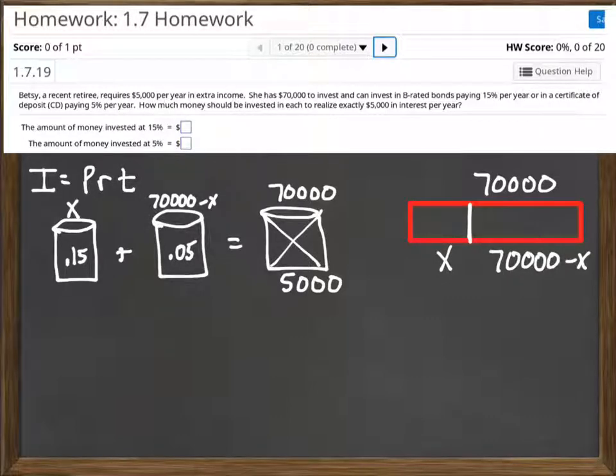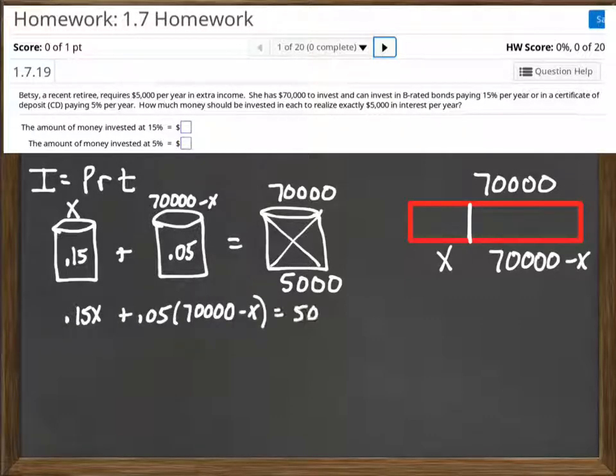So what we're going to do now is we can go ahead and label each of the other two pieces there. I have X dollars to put into the 15%, and I have $70,000 minus X to put into the 5%. And then we just multiply down using the relationship. Interest is equal to principal times rate times time. Well, the time here is just one year. So we multiply down X times 0.15, and then the 70,000. And here we already have the interest, so we don't have to multiply down there.